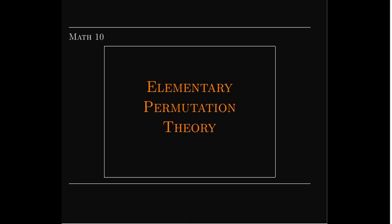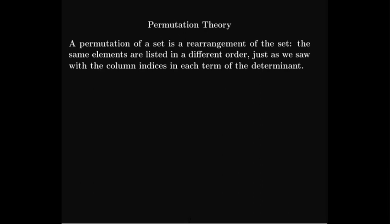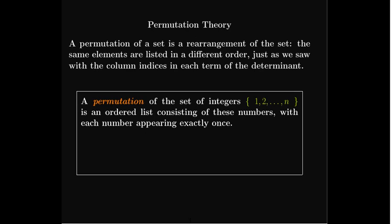In this short video, we're going to talk about a mathematical concept called permutation and look at some elementary properties of permutations. A permutation, for us, starts with a set of counting numbers and forms a rearrangement. In general, a permutation is a rearrangement of any set, but we're going to look at the set of counting numbers — the same idea we saw with column indices of the 3×3 determinant. A permutation of the counting numbers 1 through n is just an ordered list of the same numbers in a different order, where each number appears exactly once.